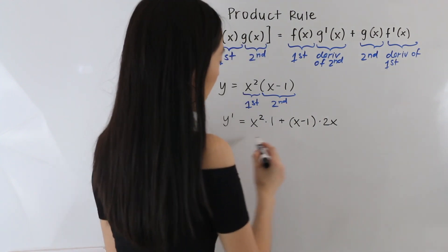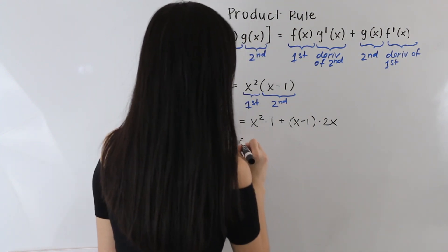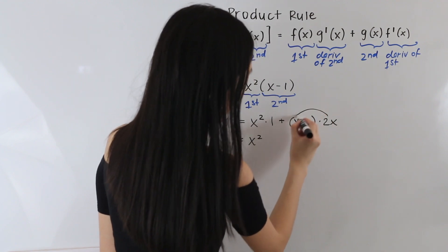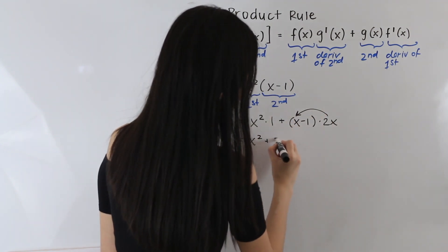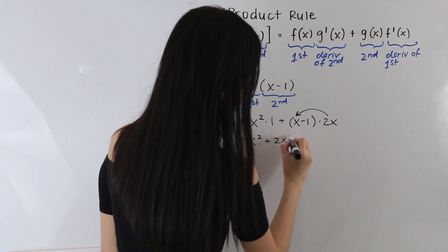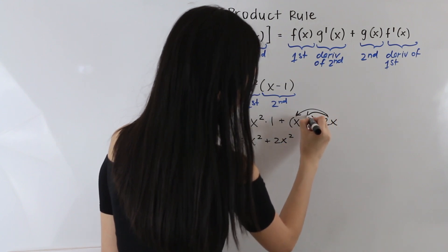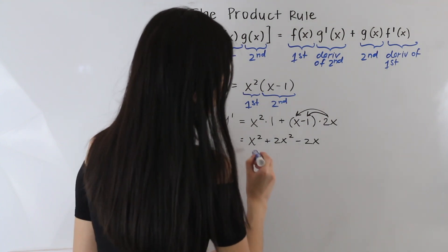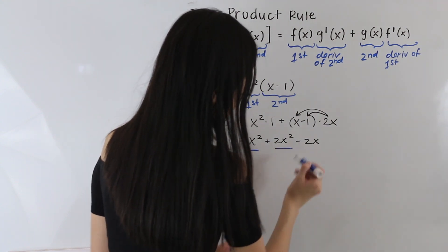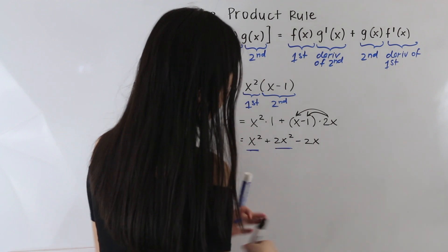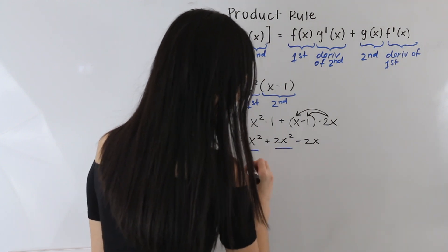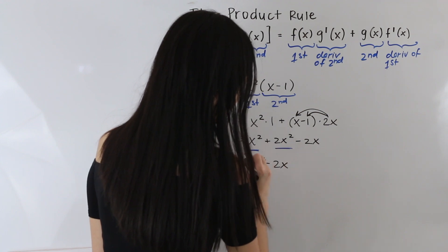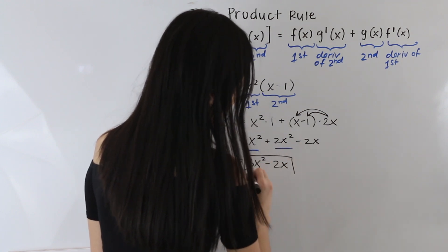Let's go ahead and rewrite this. We have x squared, and let's distribute this 2x, so we have plus 2x squared and then minus 2x. We can see that we have like terms — this x squared and this 2x squared — so we can combine those and get 3x squared minus 2x. And so that is our derivative.